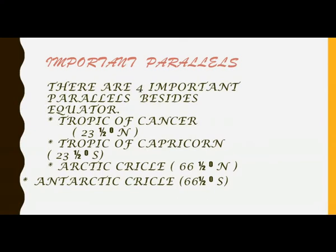There are four important parallels on the globe: the Tropic of Cancer, Tropic of Capricorn, Arctic Circle, and Antarctic Circle. The parallels beside the equator are numbered like this — Tropic of Cancer is 23 and a half degrees north, and Tropic of Capricorn is 23 and a half degrees south.